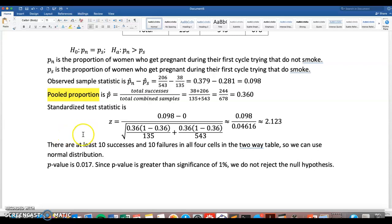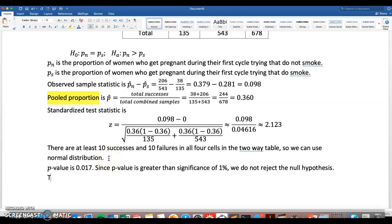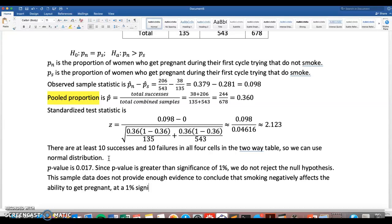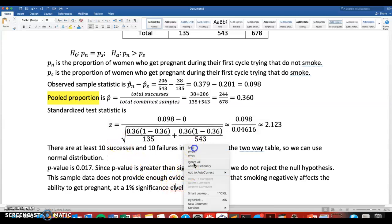All right, now I want to write a concluding sentence. What does this mean? This sample data does not provide enough evidence to conclude that smoking negatively affects the ability to get pregnant at a 1% significance level. So we can't reject the null hypothesis, so we can't say there's enough evidence to conclude that smoking negatively affects the ability to get pregnant.